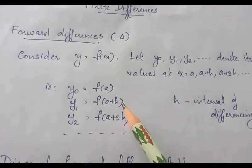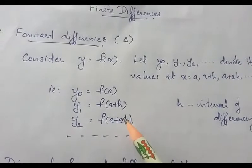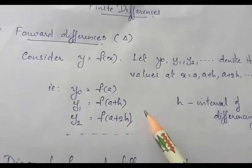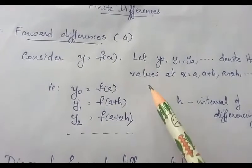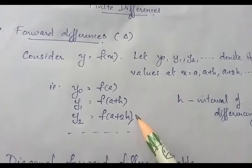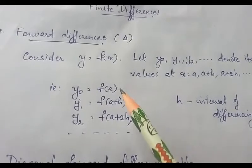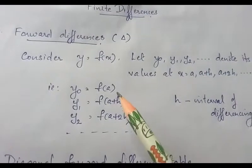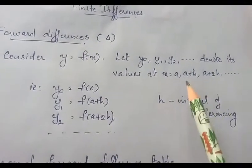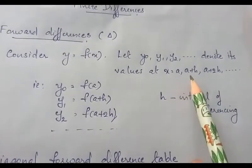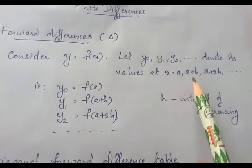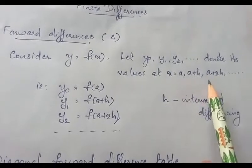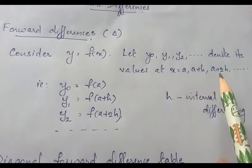You can see that if you take the difference of any two consecutive values of y, the difference will be h. For forward differences, we have equal intervals — the arguments are at equal intervals. Look at the values of x: the difference between a plus h and a is h. Likewise, the difference between a plus 2h and a plus h is also h.